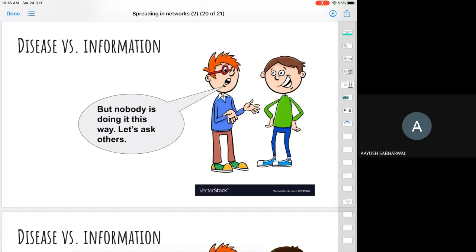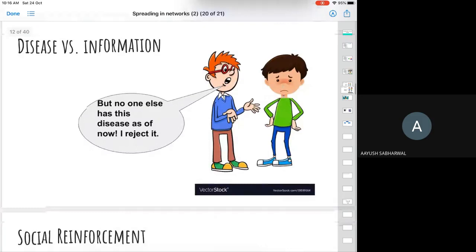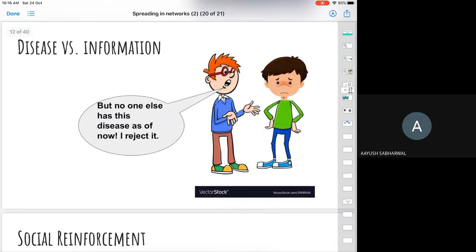As shown in this figure, if my friend walks to me with some idea and I see that none of my other friends is doing that, then I'll be hesitant to adopt that. On the other hand, if it was a disease, we cannot give an excuse like "no one else has the disease as of now, so I reject it." You do not have an option to reject the disease, but you have an option to reject an idea.